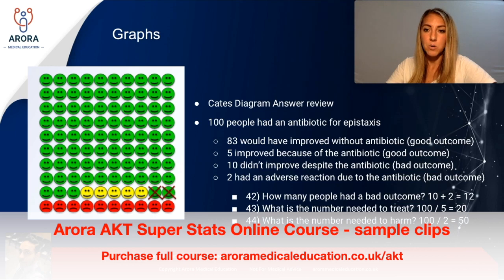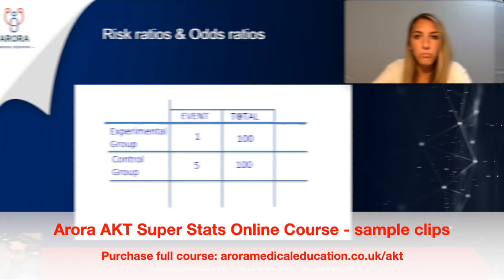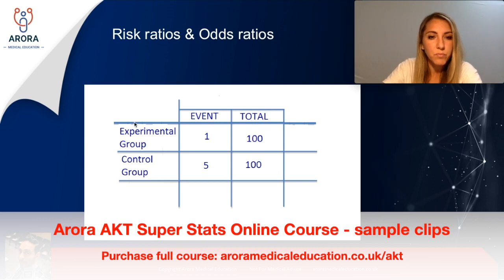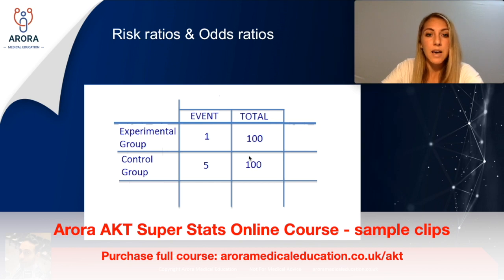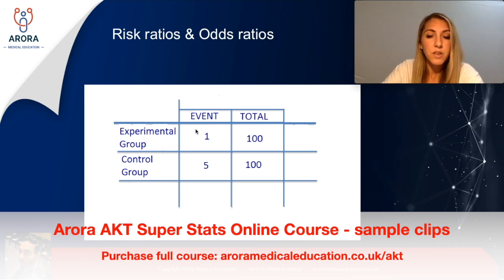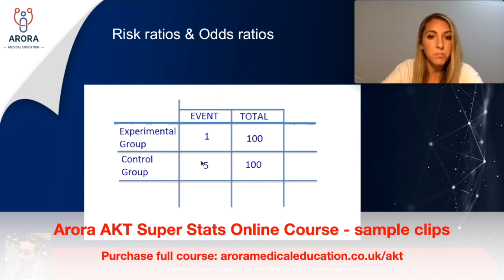How many people had a bad outcome? That would be 12 — the 10 reds plus the 2 greens with crosses. We have the exposed or experimental group and the control group. 100 people had the new operation and 100 had the old operation, so we put 100 in each total box. One person who had the new operation had post-op paralysis — that one person goes in the event box for the experimental group. Five people who had the old operation had the event, so they go in the event box for the control group.